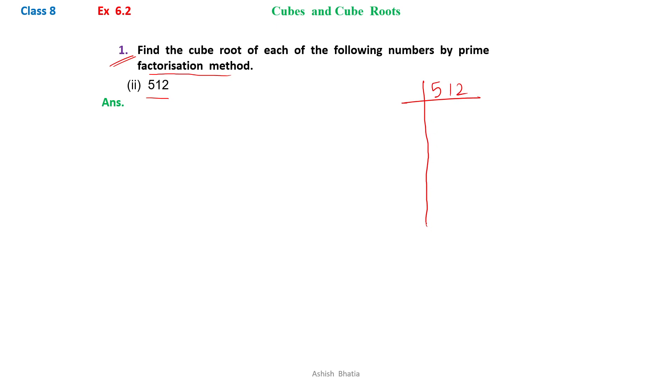Here we need to find out the prime factors of 512. We start the division by 2 as it is divisible by 2.